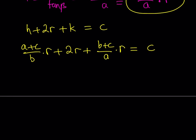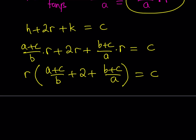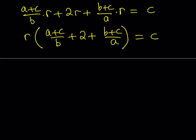What am I going to do? Well, I'll factor out the r because r is a common factor. Then I should be getting a plus c over b plus 2 plus b plus c over a, and the whole thing is equal to c. Nice. What was I trying to do? Well, I was trying to solve for r, and I was supposed to find it in terms of ABC. So, we're almost there. Just hang in there. What am I going to do? Well, let's go ahead and make a common denominator.